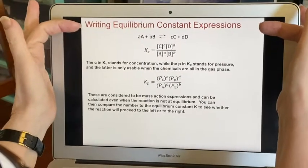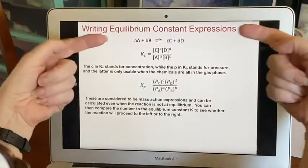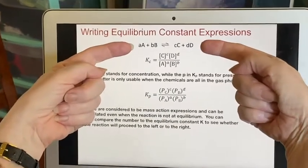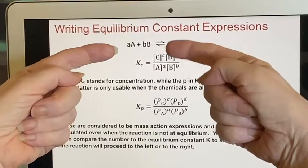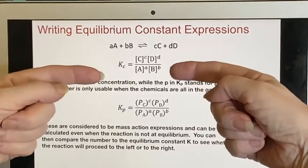When you want to write equilibrium expressions, you're going to start with the balanced equation, and then you're going to look at it and identify what are the products, what are the reactants, and then you're going to come down and say, all right, what is K sub C?